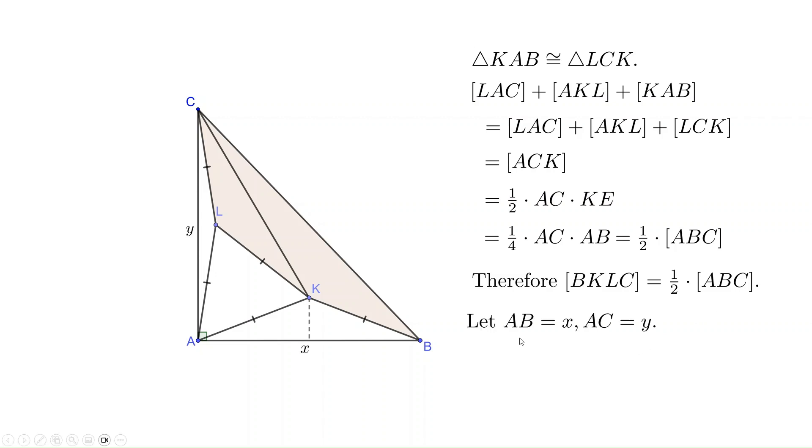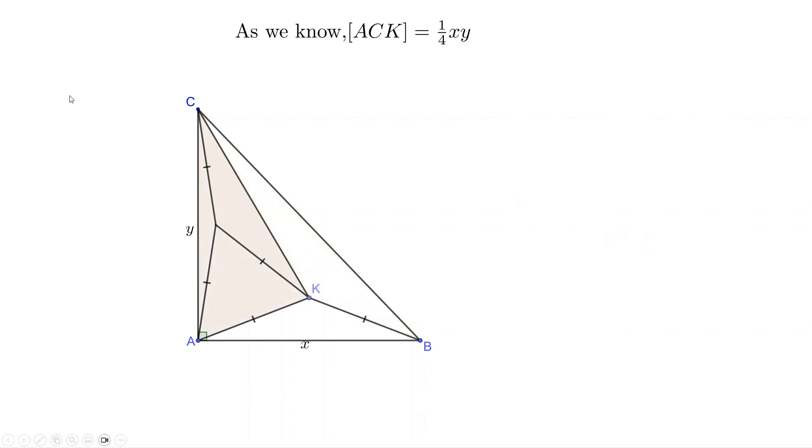If we assume AB has length x and AC has length y, then the area of triangle ABC is just one half xy. So the quadrilateral BKLC has an area 1/4 times xy. So our target is to calculate x times y.